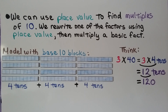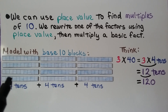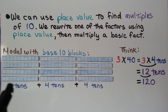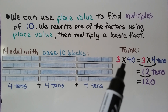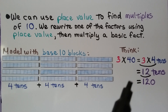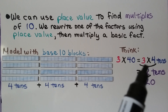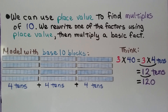We can use place value to find multiples of 10. We rewrite one of the factors using place value, then multiply a basic fact. We have 3 times 40 — that's 3 groups of 40, which is 4 tens plus 4 tens plus 4 tens. So 3 times 40 is equal to 3 times 4 tens. The basic fact is 3 times 4, which is 12, so we have 12 tens. And 12 tens is equal to 120.